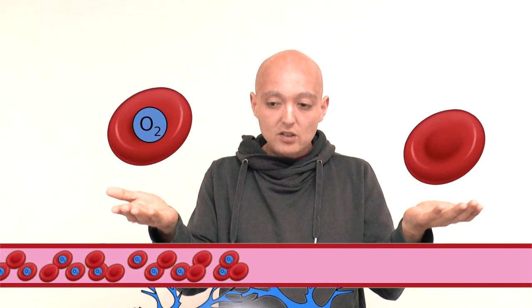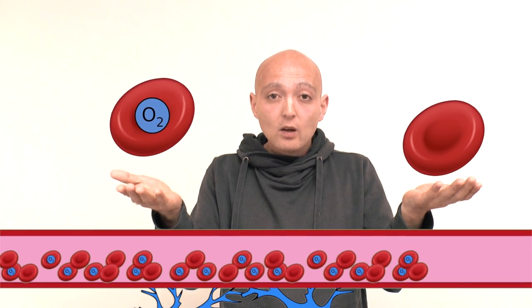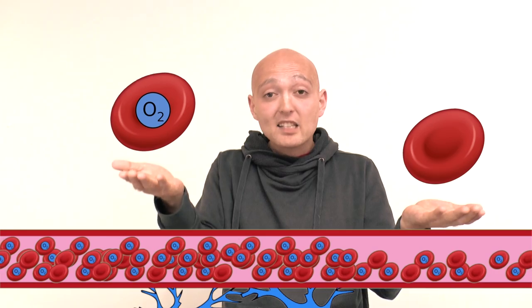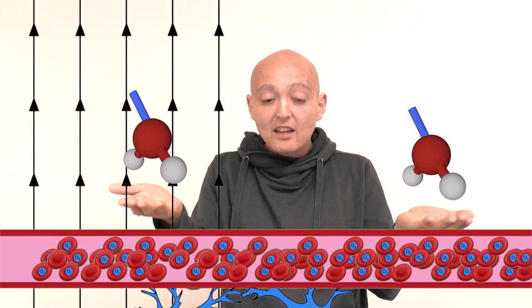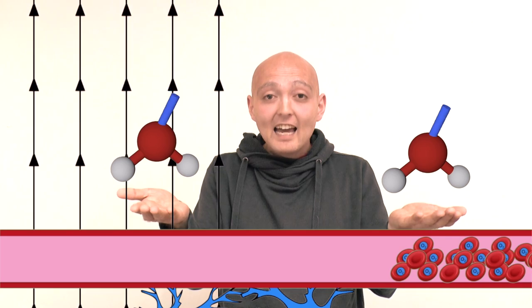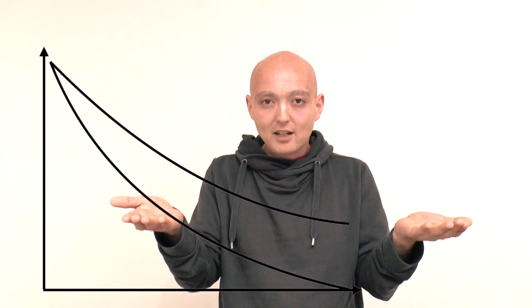A brain area becomes more active, causing the blood vessels to widen, meaning more oxygenated blood flowing towards it. That means less magnetic field disturbances, the spins synchronizing for a longer period of time, and the signal that we want to measure staying for a longer period of time.